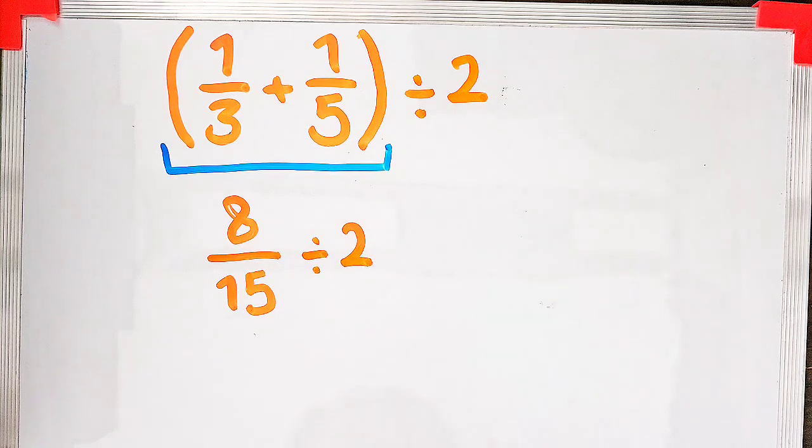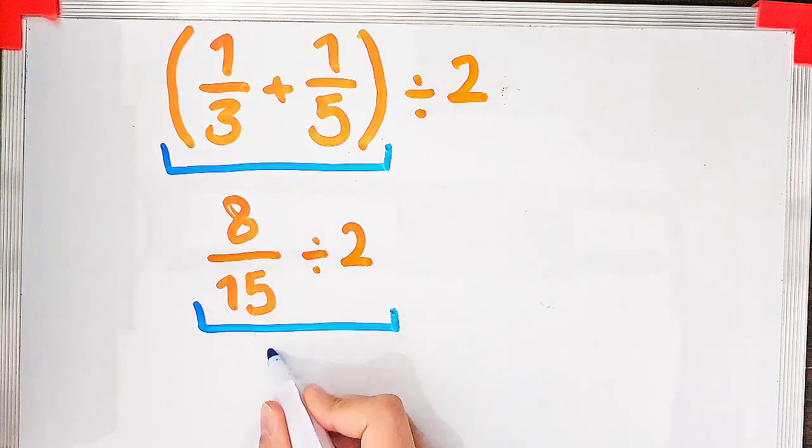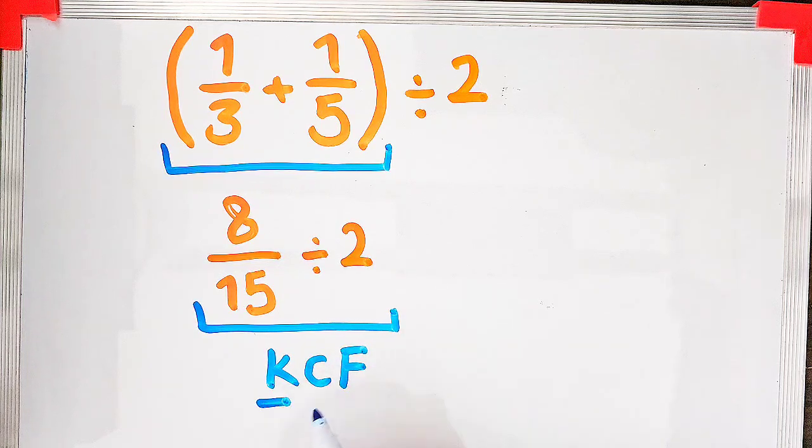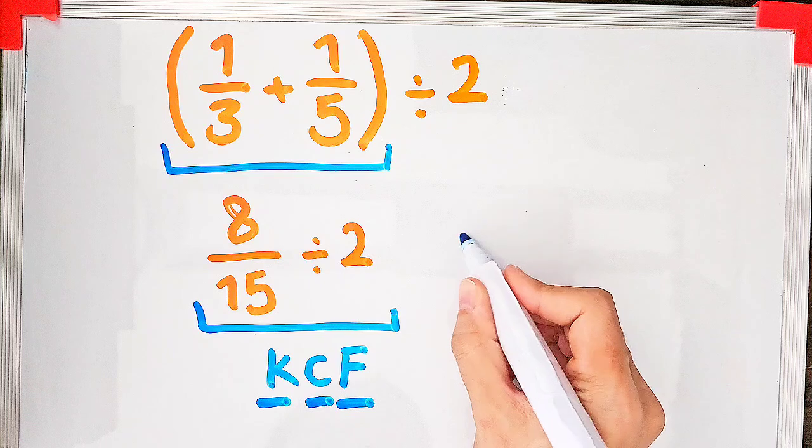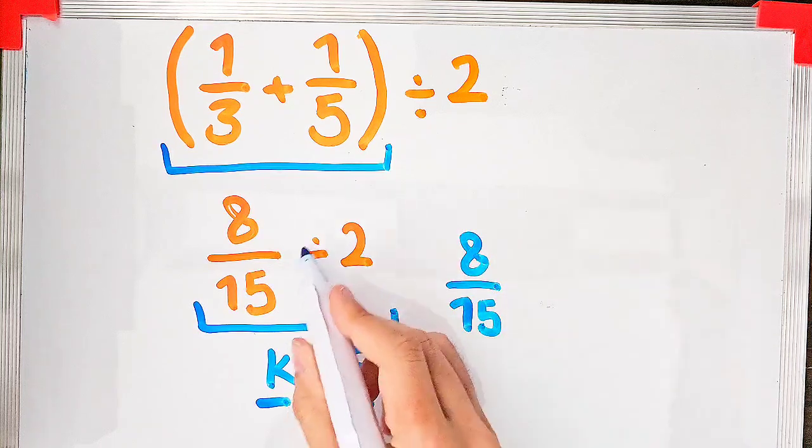To solve this part we need to follow a rule called KCF. KCF means keep the first fraction as it is, change the sign, and flip the second number or fraction. We keep the first fraction as it is.